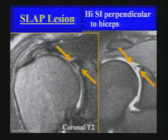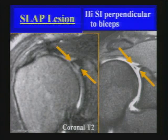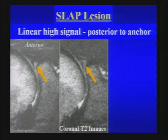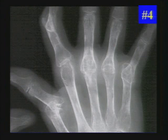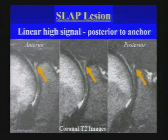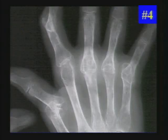Whether on an MR arthrogram or a non-arthrographic study, this abnormal perpendicular high signal allows us to suggest the diagnosis. The other helpful diagnostic criterion is linear high signal extending posterior to the biceps anchor. There are many variations in the anterosuperior quadrant of the labrum, but if you see high signal extending posterior to the labrum, you are dealing with a labral tear. Also look for a paralabral cyst.